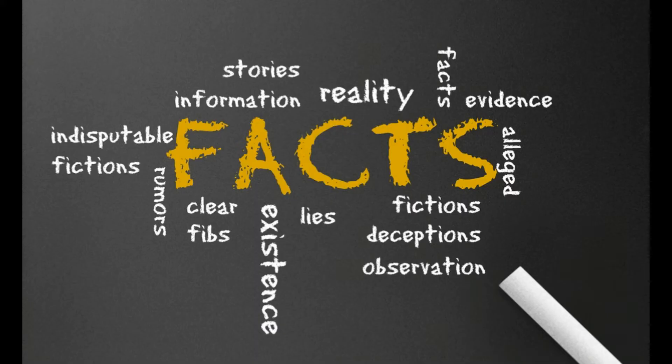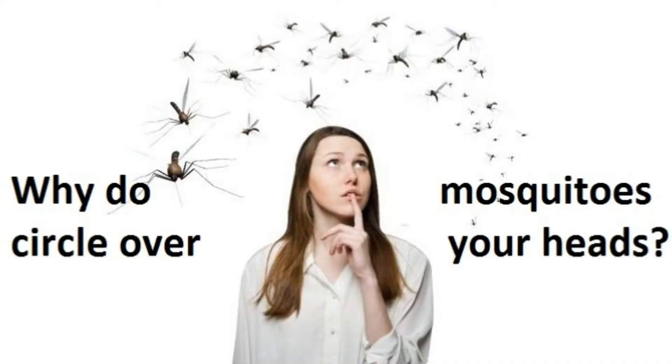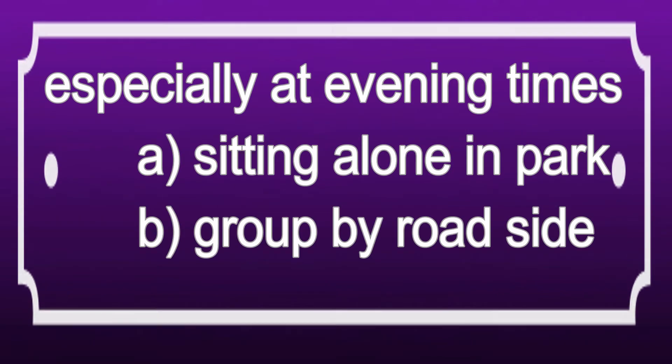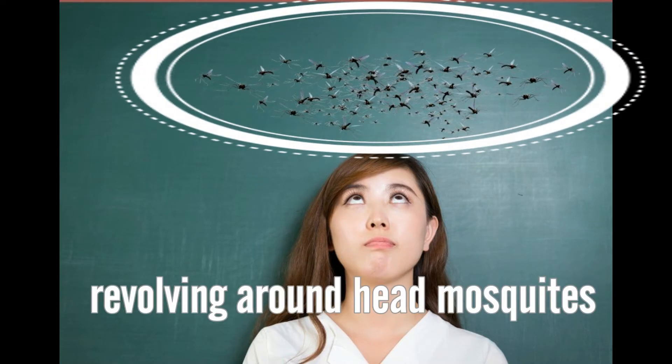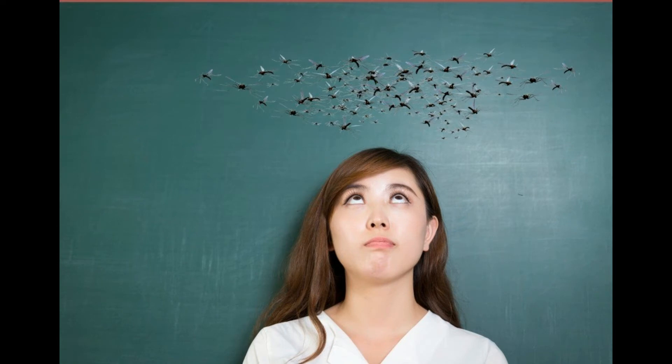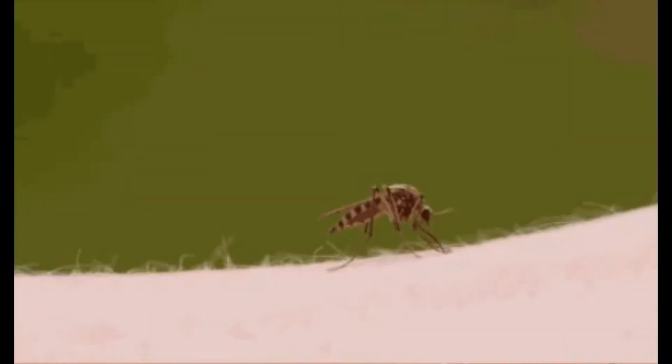The tutorial is regarding the reason why mosquitoes circle over our heads, especially at evening times when we are sitting alone in the park or in a discussion at roadside. There we can observe a group of mosquitoes which are revolving around our head. I think most of us have experienced this type of activity when we went to a park.